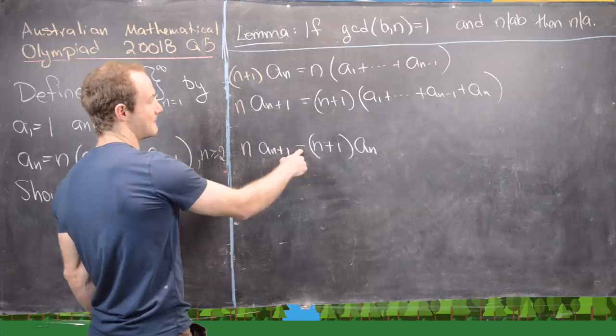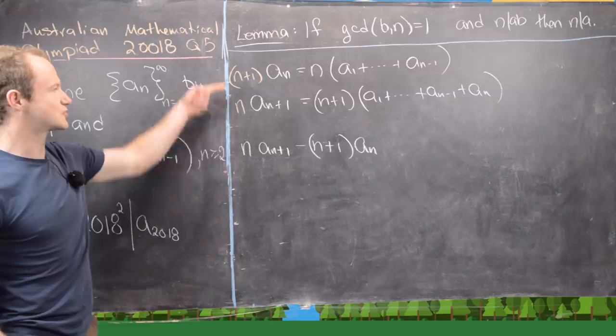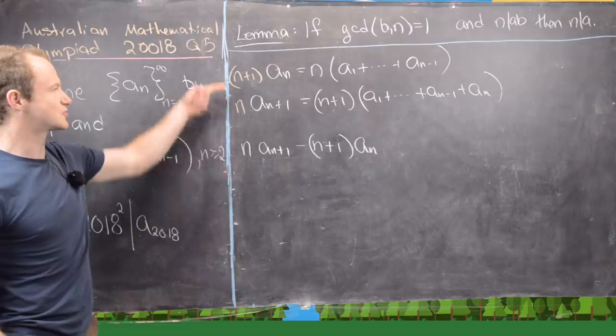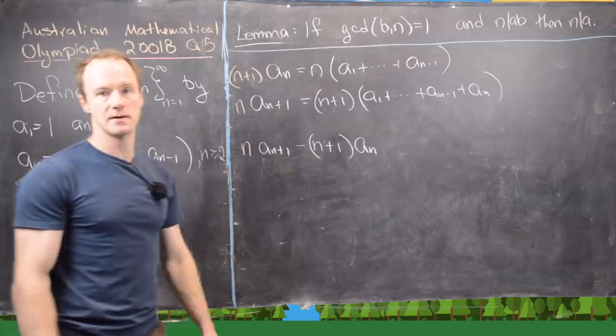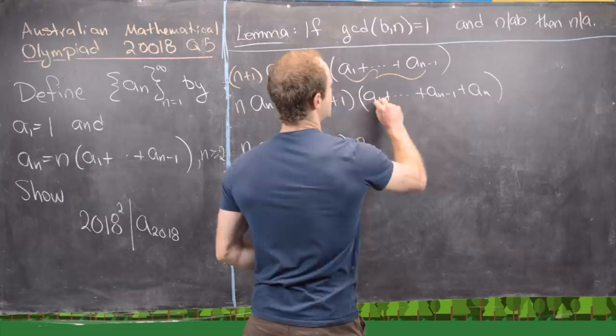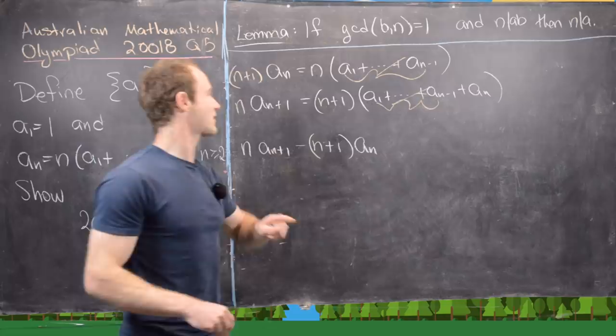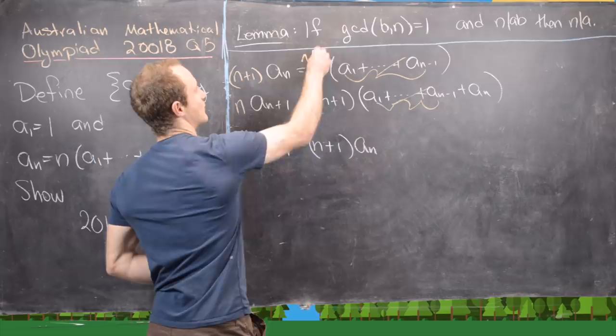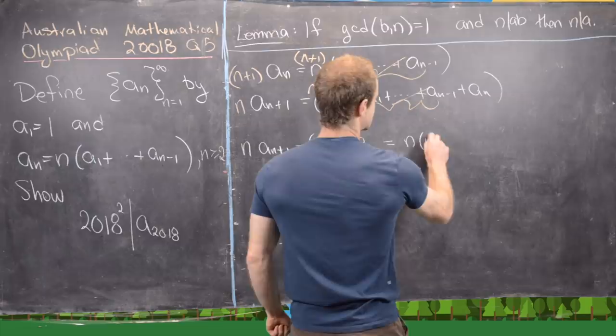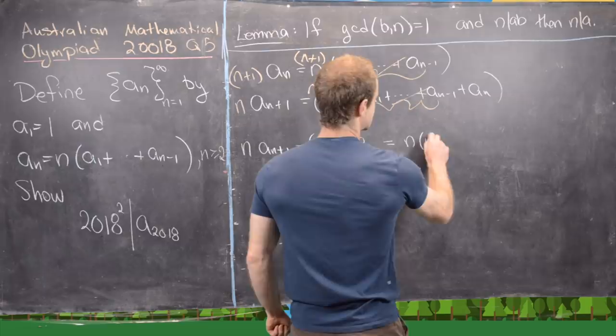So if we take n times a_{n+1} minus n plus 1 times a_n. In other words we're taking this bottom equation and subtracting the top equation. Notice that a_1 will cancel because here we have n times n plus 1 times a_1 and here we have n plus 1 times n times a_1 and all the way up to a sub n minus 1 will cancel. So all of these will cancel and all we're left with is n times n plus 1 times a_n. So we know that this is equal to n times n plus 1 times a_n.